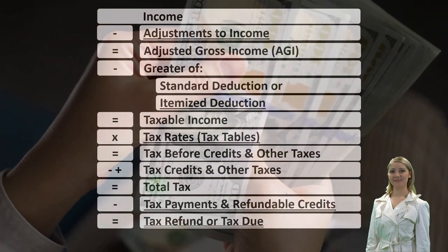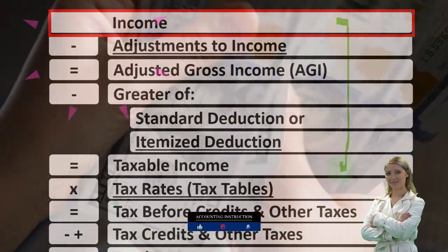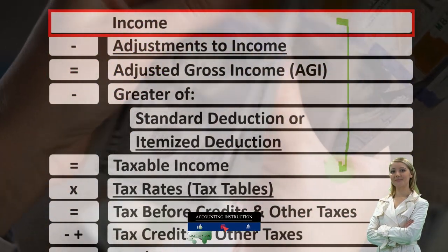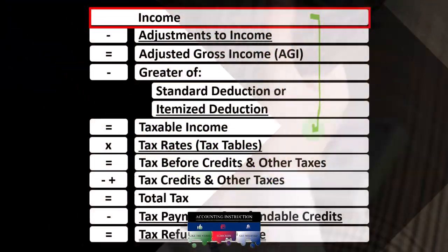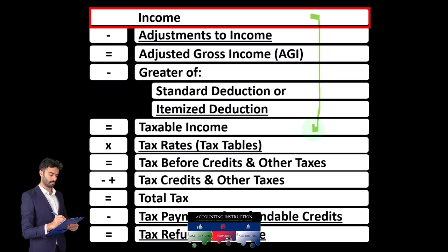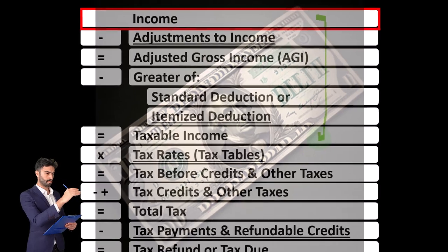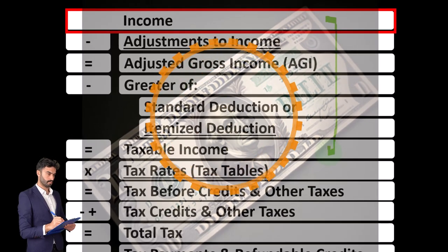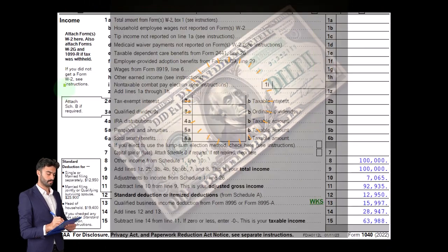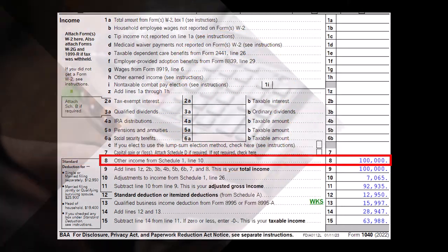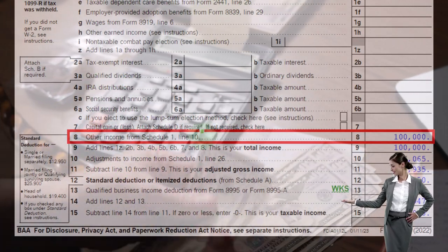Looking at the income tax formula, we're on line one income. The first half of the income tax formula is in essence an income statement — just an outline of scaffolding — with other forms and schedules flowing into these line items. One of those is the Schedule C, which has business income minus business expenses, giving us the net business income. The Schedule C net income flows into line one income of our income tax formula, specifically into the Schedule 1, which flows into page one of Form 1040, line number 8.